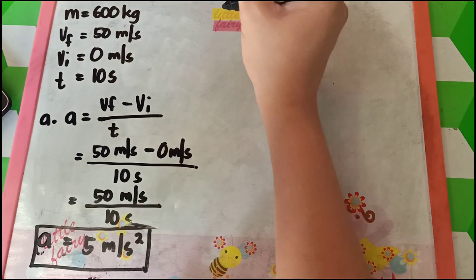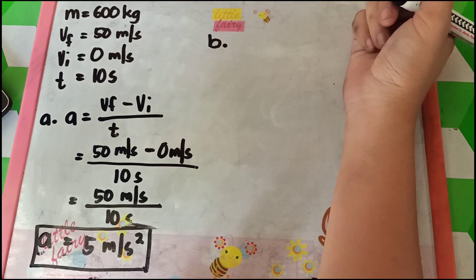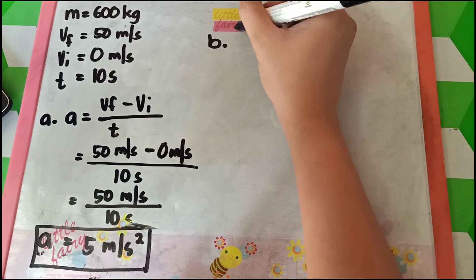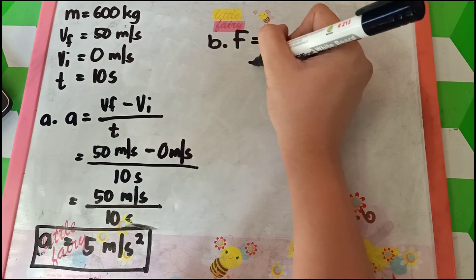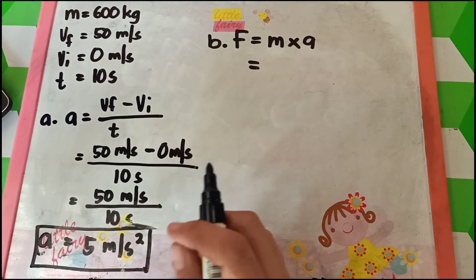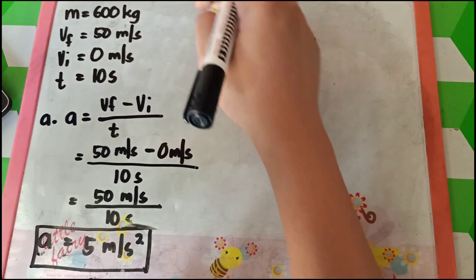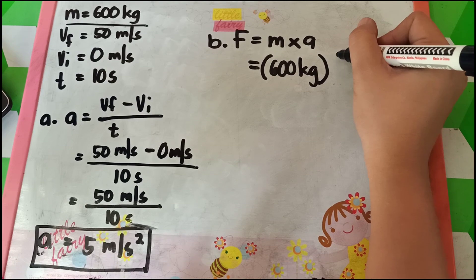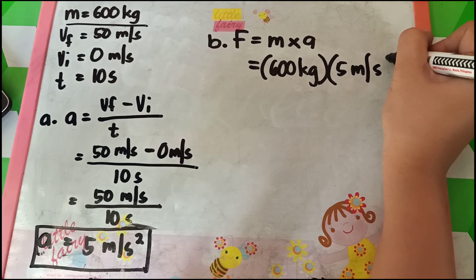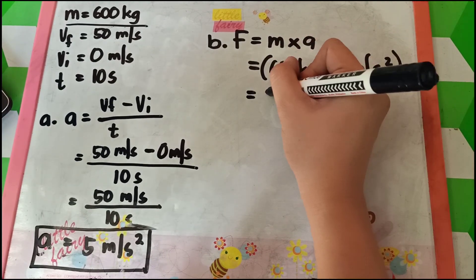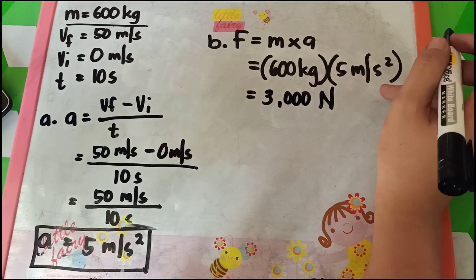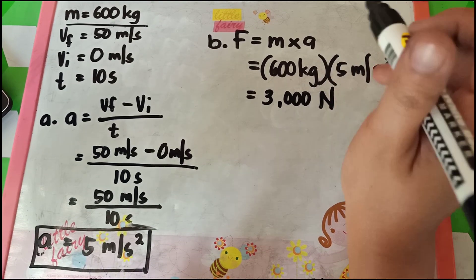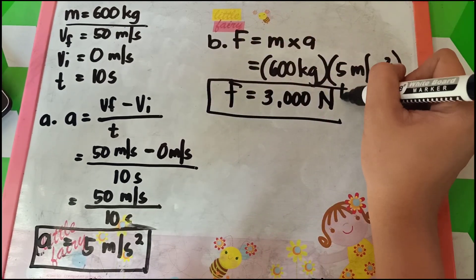Now let's go to question B — how much force is required to accelerate the car? We are looking for the force. The formula is F equals mass times acceleration. We already solved the acceleration as 5 meters per second squared, and the mass of the car is 600 kilograms. So, 600 kilograms multiplied by 5 meters per second squared gives 3,000 newtons. This is the force required to accelerate the car.